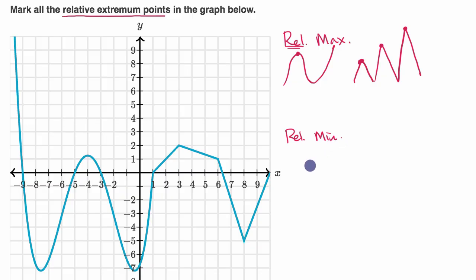Now relative minima are the opposite. They would be the bottom of your valleys. So that's a relative minimum point. This right over here is a relative minimum point, even if there are other parts of the function that are lower. Now there's also an edge case for both relative maxima and relative minima.